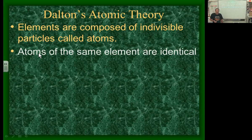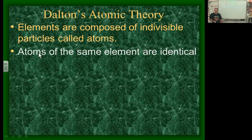Dalton's second concept: atoms of the same element are identical — an oxygen atom looks like an oxygen atom, a hydrogen atom behaves like a hydrogen atom. However, back then they only had microscopes and graduated cylinders; you couldn't really see an atom. This is not 100% true. Atoms of the same element do behave similarly, but they're not identical. Some may have extra or fewer neutrons, which changes their weight — and we call those isotopes.